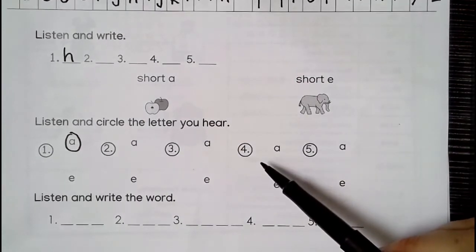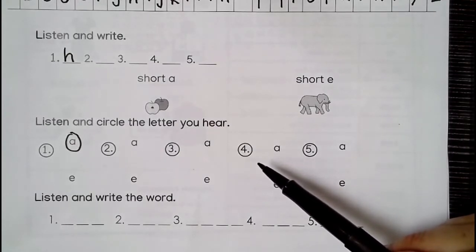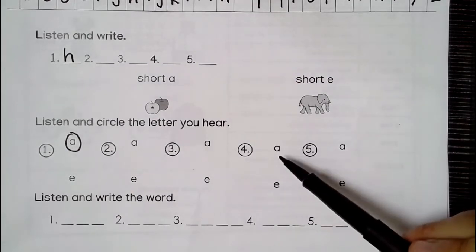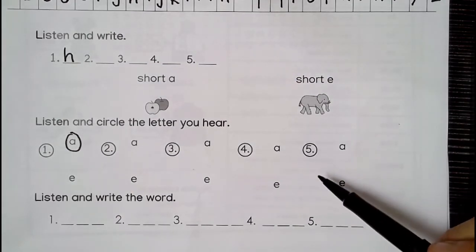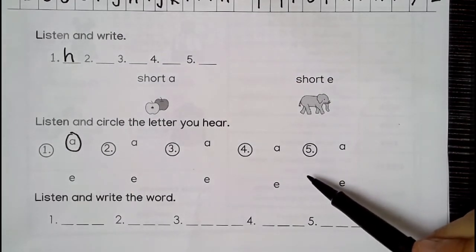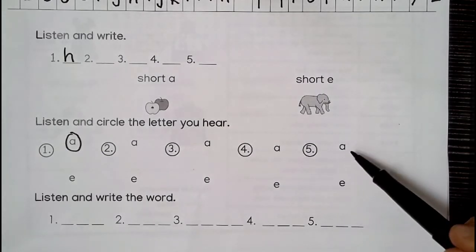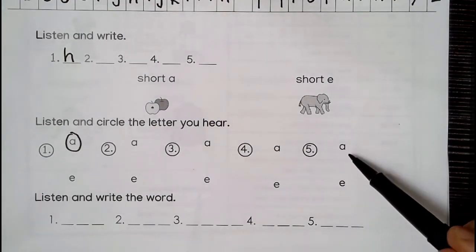Number four. Ah. Ah. And number five. Eh. Eh. Up or down. Eh. Or E. Eh.